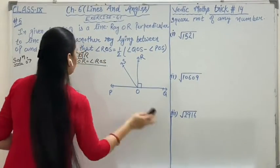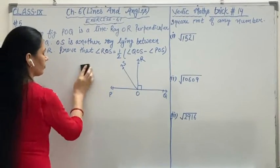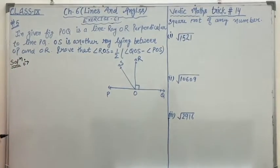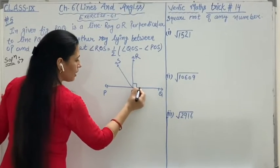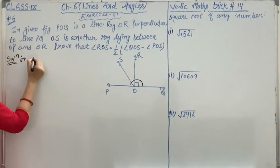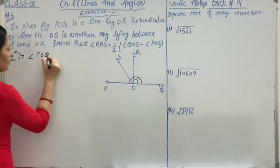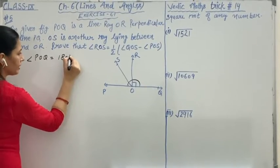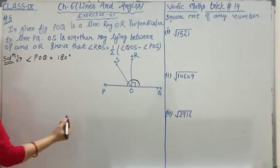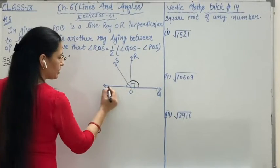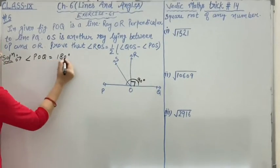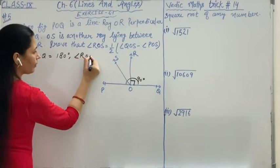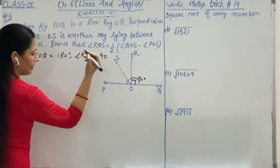Now start our question. First, POQ is a line, that means angle POQ is equal to 180 degrees, which is a straight angle. And OR is perpendicular to PQ, that means angle ROQ is equal to 90 degrees.